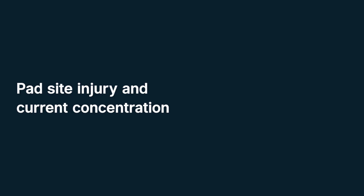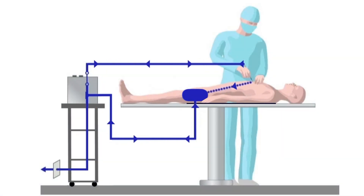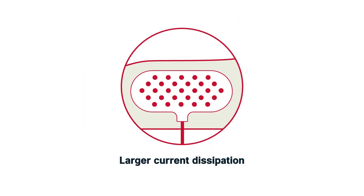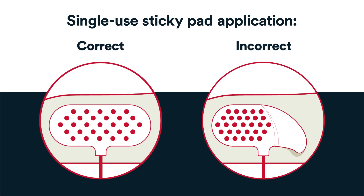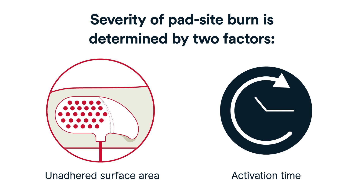Pad site injury and current concentration. As alternating current enters and exits the patient, the return electrode size is key to preventing unintended tissue damage to the skin in contact with it. Return electrodes can be a single-use sticky pad or a large reusable pad. The large surface area dissipates electrical current to reduce energy density and avoid tissue damage. When a single-use sticky pad is incorrectly applied, it can cause a pad site burn. The degree of tissue damage or severity of the pad site burn is determined by two factors: unadhered surface area and activation time.